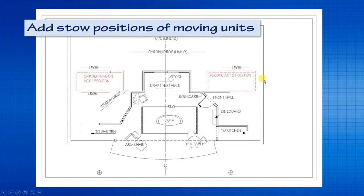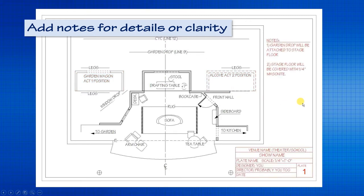If you have things moving around in your scene in different positions, show the act one position as solid lines where a unit is parked in the wings, and show its act two position as a phantom dashed line — indicating it will move into that position. You can also add notes for any clarification. Anything that won't fit on your drawing, say 'see note two' and add it in the notes. Things like 'the stage floor will be covered with quarter-inch Masonite' are universal notes that people will read before starting work. Of course, add your title block and information.